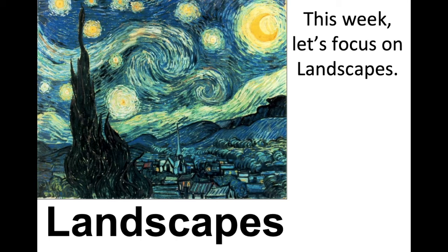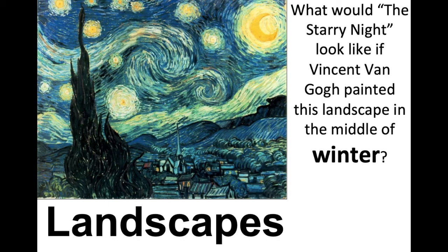I've got a few questions for you. We have a very famous painting — hopefully you're looking at it — and it's called The Starry Night. It's painted by a very famous artist called Vincent van Gogh. So let's say Vincent van Gogh gets up one morning and says, 'I'm going to go out and paint a landscape.' He grabs all of his supplies, goes outside, and it's the middle of winter. What would The Starry Night look like if he painted this landscape in the middle of winter? What could we add that would give us clues it was painted in winter?